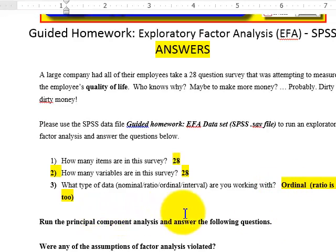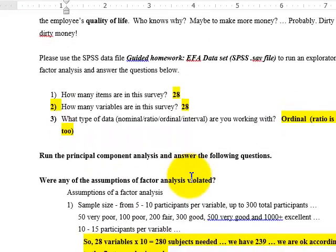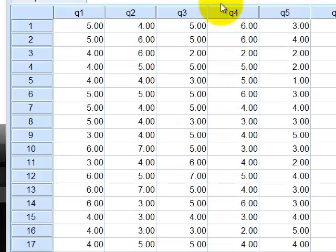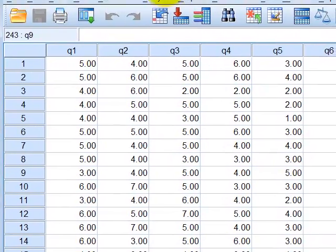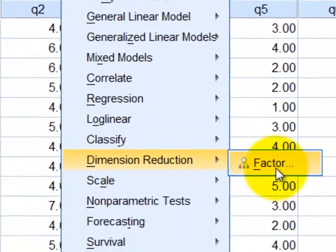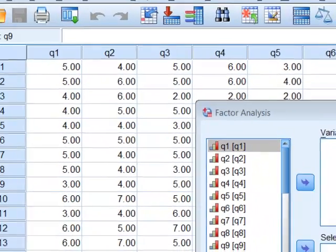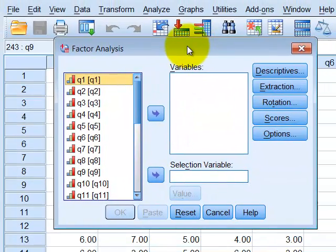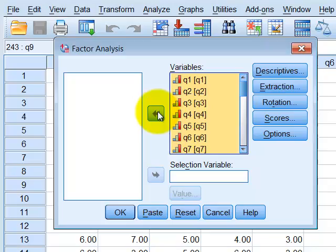We're going to go ahead and run our principal component analysis and answer these following questions. So you're going to go to Analyze, Dimension Reduction, Factor. We're going to do the PCA first in order to answer a couple of the assumptions. So first thing, we're going to put everybody over into the variable box.